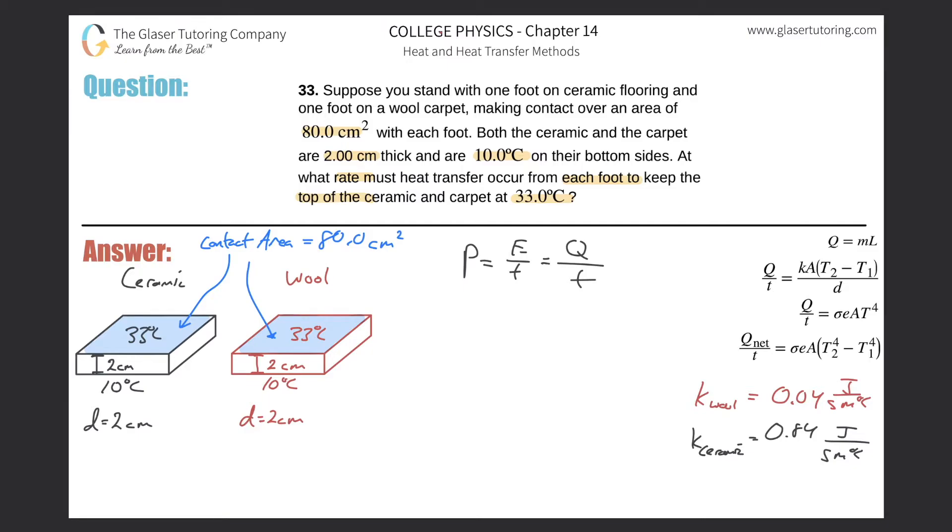And you also have to know the nature of the type of heat transfer that's occurring here. When you have two objects touching, when you have material touching one another, as such, your foot is placed on the ceramic or your foot is placed on wool, that is a conduction heat transfer. So I'm going to be using this conduction heat transfer formula. Instead of writing Q over T, I'm just going to write power. Is equal to the thermal constant multiplied by the area over which that conduction is occurring, then multiplied by the temperature difference across the two surfaces, divided by the thickness or the distance between those two temperatures.